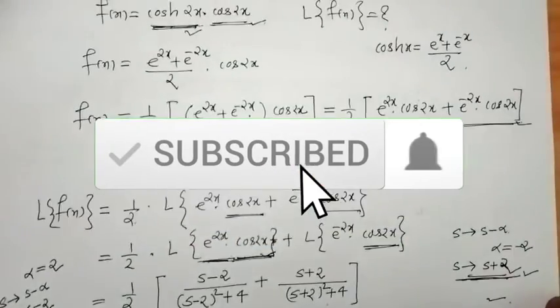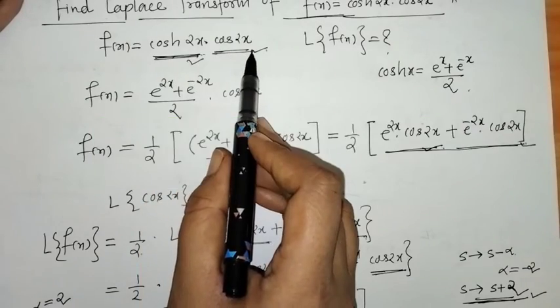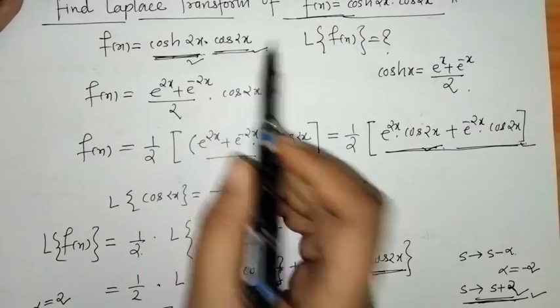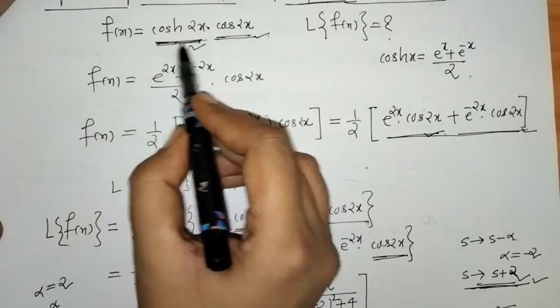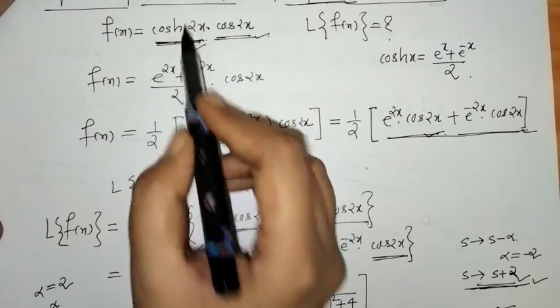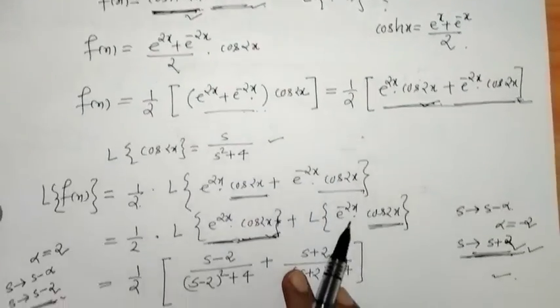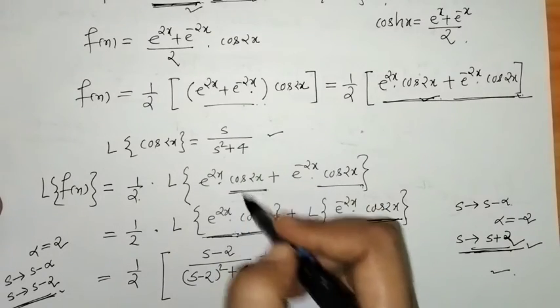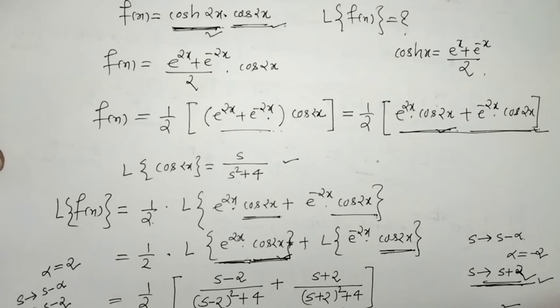In this way we have found the Laplace transform of cosh(2x)·cos(2x). We wrote the hyperbolic cosine in terms of exponentials, then applied the First Shifting Property. That's it for now — see you in the next video, thank you, keep watching.